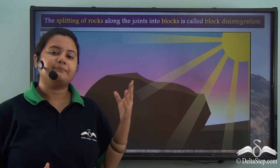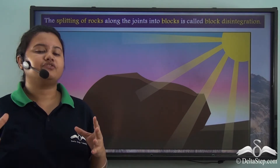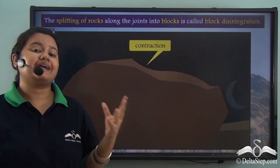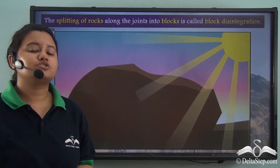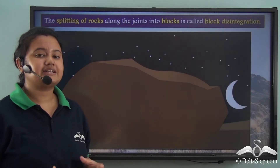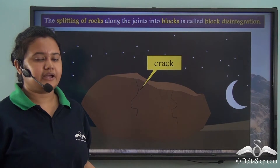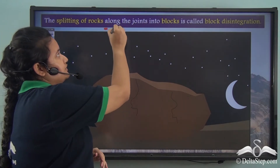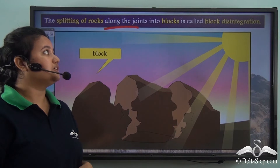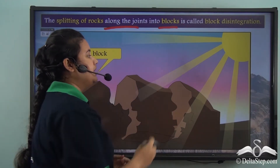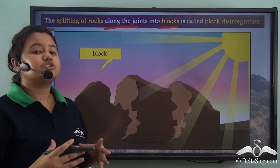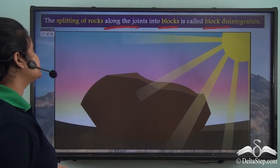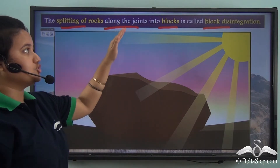During the day when temperature is high, the rocks are heated up, and at night when temperature falls, the rocks cool down. Rocks expand on heating and contract on cooling. Due to continuous expansion and contraction, cracks develop along the surface of the rocks, and due to this repeated process the rocks are broken down into blocks along the cracks. This process of weathering is called block disintegration — the process in which rocks are broken down along their joints into blocks.